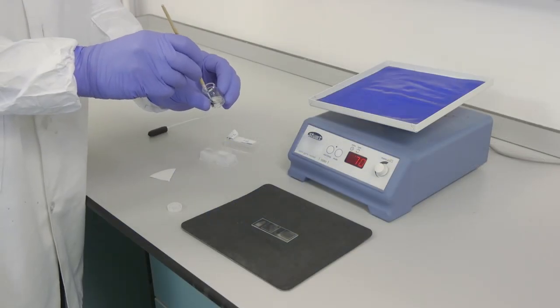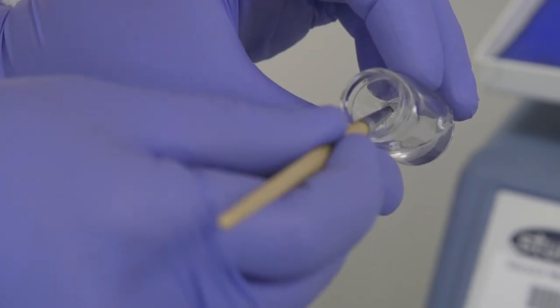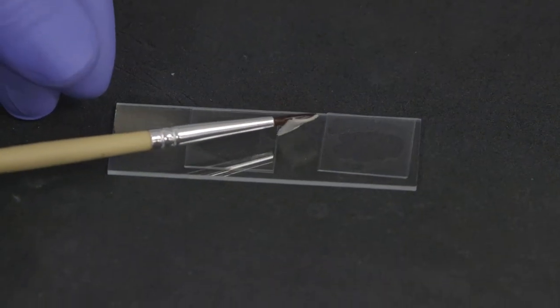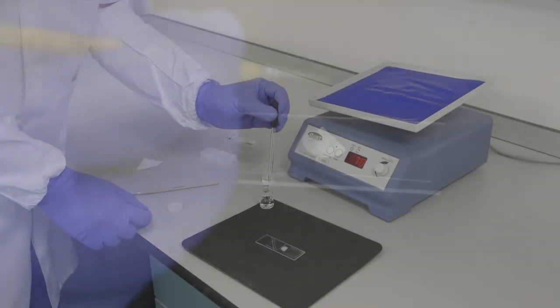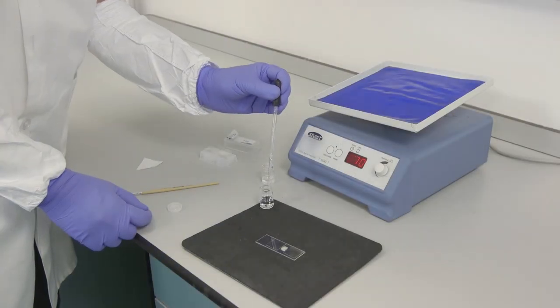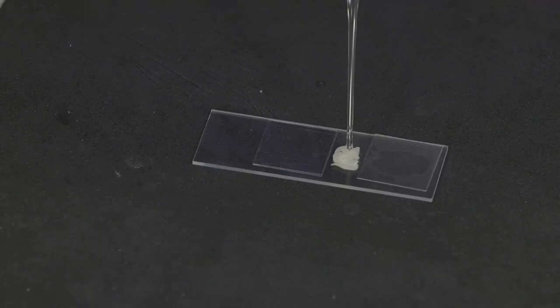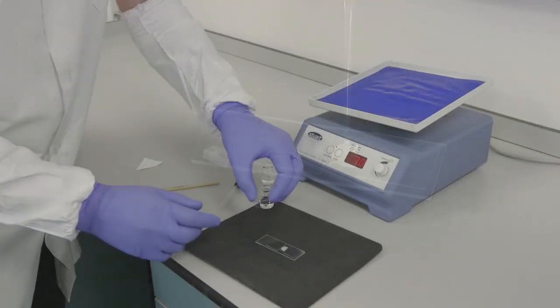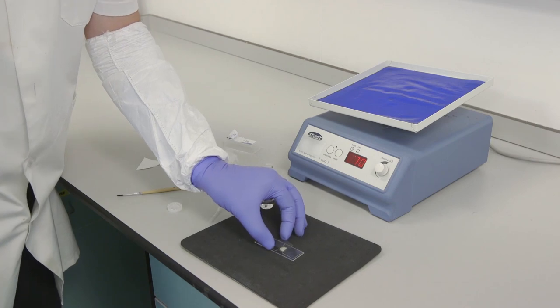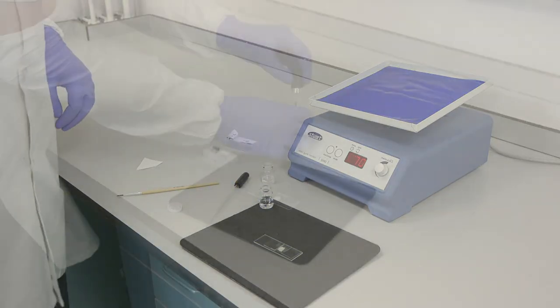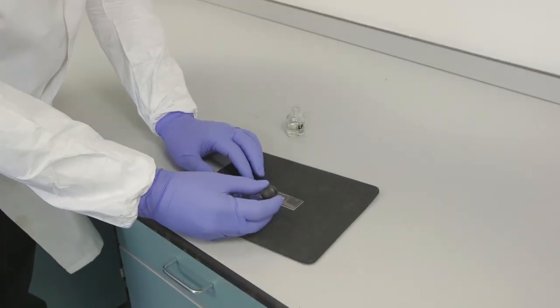Carefully place the slice right side up on the slide and position it with a small brush. Apply the mounting media and coverslip. Use clear nail polish to seal the coverslip.